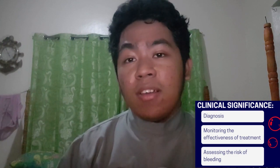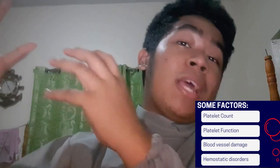Third is assessing the risk of bleeding. Bleeding time tests may be used to assess a person's risk of bleeding in certain situations, such as before surgery or dental procedures. And fourth, it can be used to monitor the use of blood thinners, such as aspirin or warfarin, on the blood clotting system. The results of bleeding time tests can help doctors diagnose and manage bleeding disorders and other conditions that affect the body's ability to form blood clots.